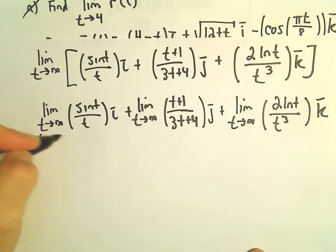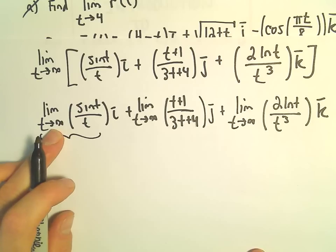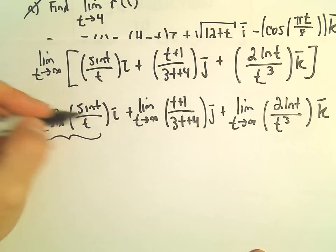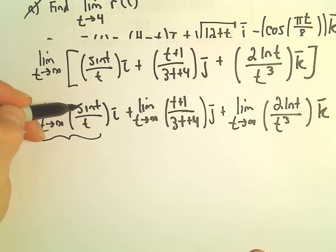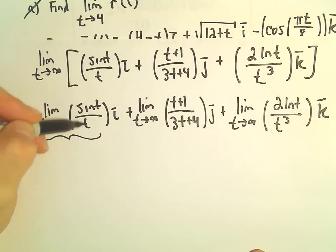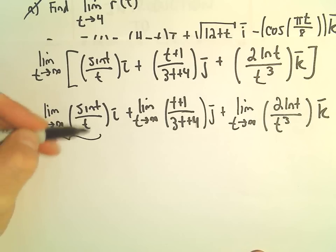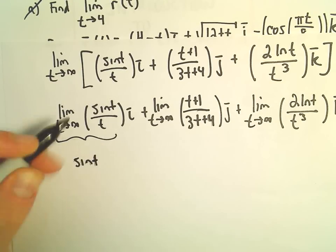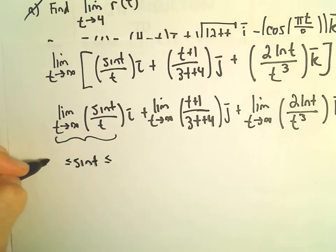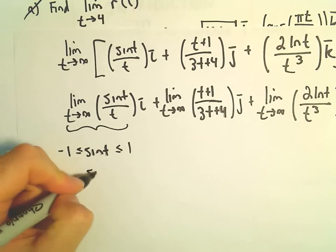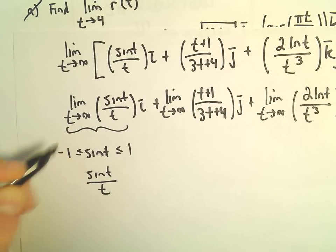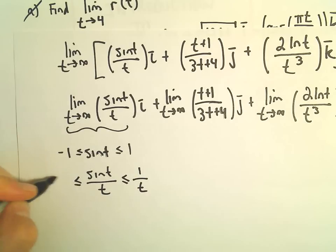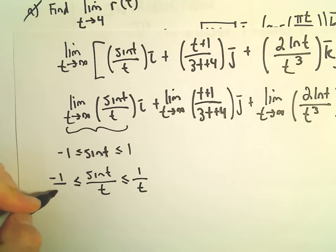For our first limit as t goes to infinity, the limit as t goes to infinity of sine t doesn't exist. Certainly as t gets large, the denominator will get very big. So what we can do here is just use the squeeze theorem. Sine of t is going to be between negative 1 and positive 1, which means sine of t over t, as t approaches positive infinity, will be less than or equal to 1 over t and greater than or equal to negative 1 over t.